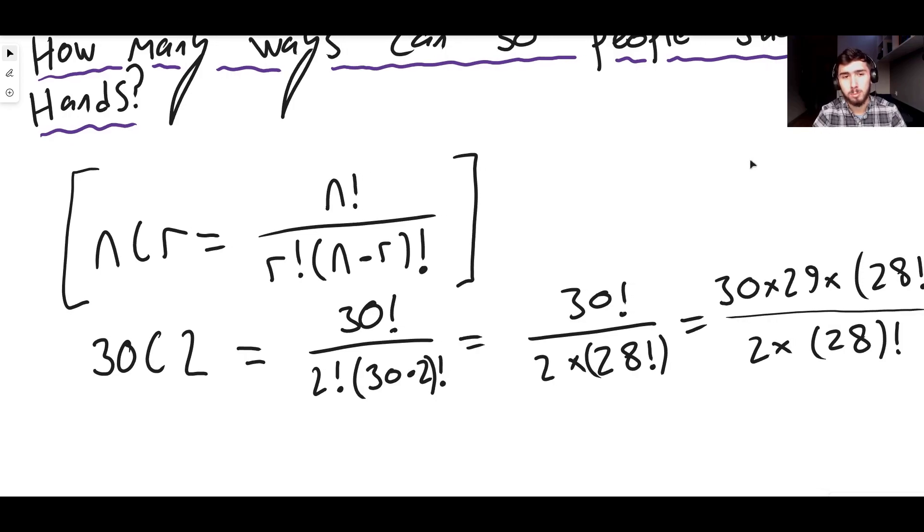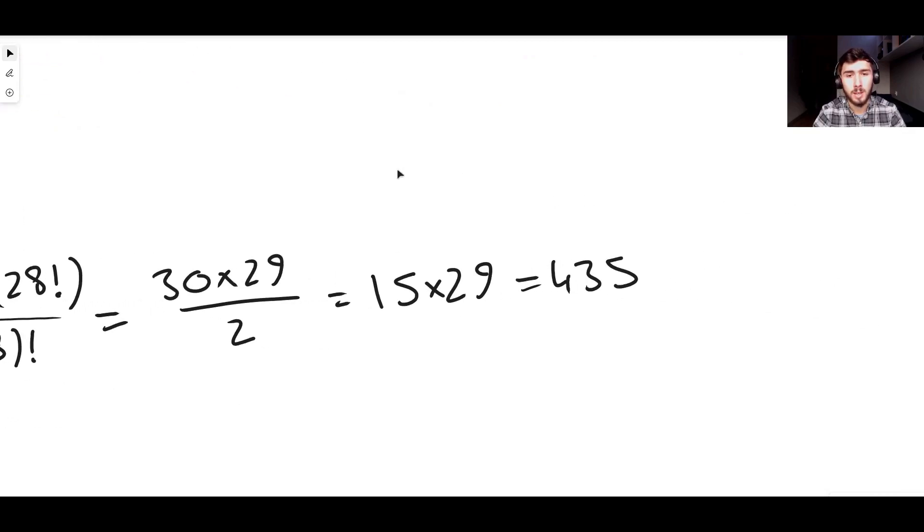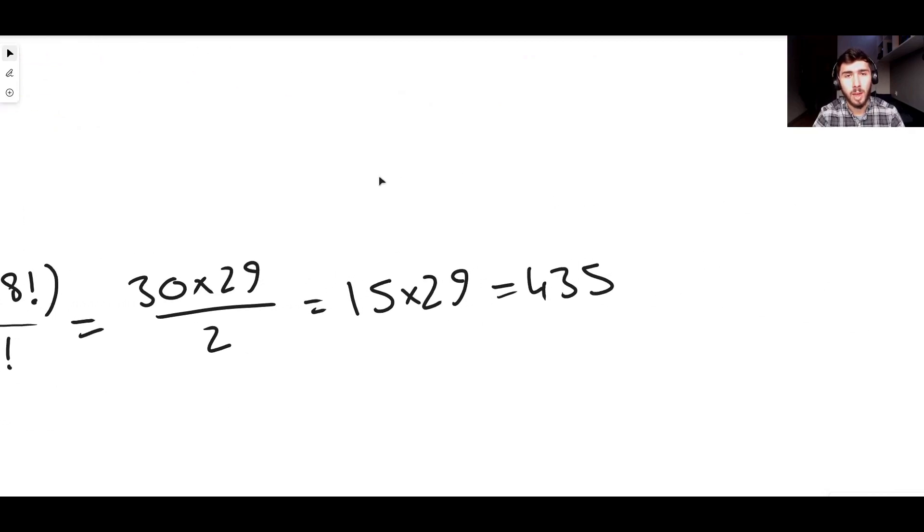So the way, the number of ways that 30 people can all shake hands in a classroom and make sure that everyone has shaken hands with everyone else one time exactly, the number of times that can happen, number of ways is 435. That is our answer. You would need to do 435 handshakes. Not you specifically, but there would be a total of 435 handshakes in that classroom before everyone has shaken hands with everyone else once.